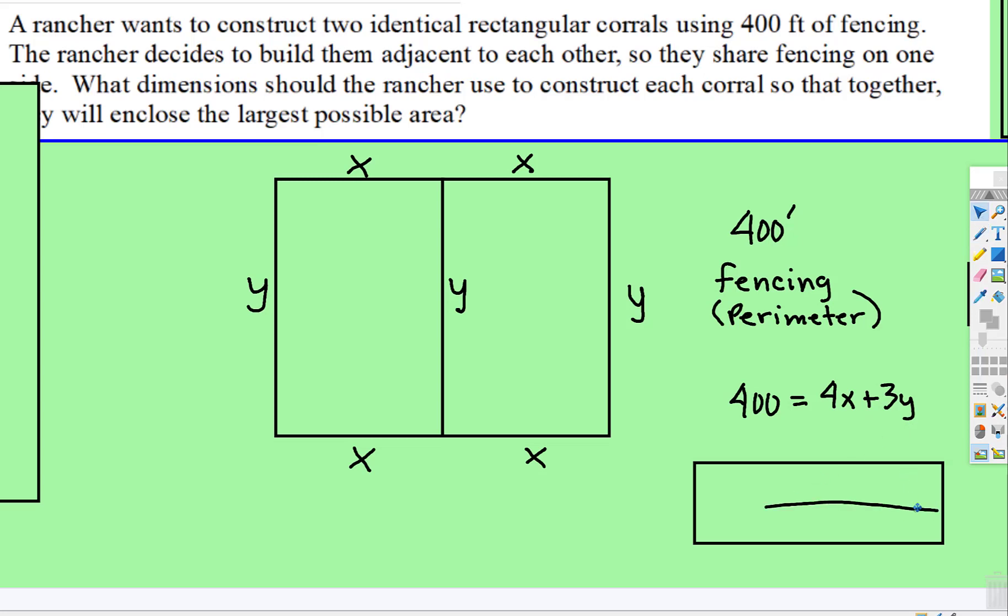So the trick will be, remember, when you're doing optimization, we don't need to do implicit differentiation. So when we find the derivative of a function, we need one variable. So I'm going to get this y by itself. You guys know the algebra. We're going to subtract 4x both sides, and then that leaves divide 3 by everything. So that's what we have.